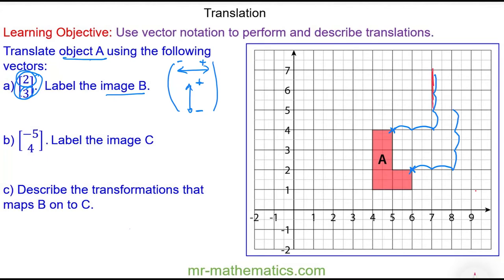Now I'm going to recreate the object using these two vertices. We should find the image is congruent with the object, which means it is identical to the object. I can check this by performing the same translation from a different vertex — translating 2 to the right and 3 units up — and you can see that works.